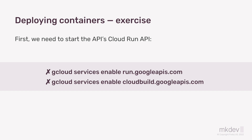One is run.googleapis, which is the one related to Cloud Run. The second one is Cloud Build — the tool we saw with Cloud Functions that is going to build the image, the container for us. It's going to take the Dockerfile, take the code, create an image, and put that image to the Google registry. We can do it this way or use a different builder, but we're going to use this one.